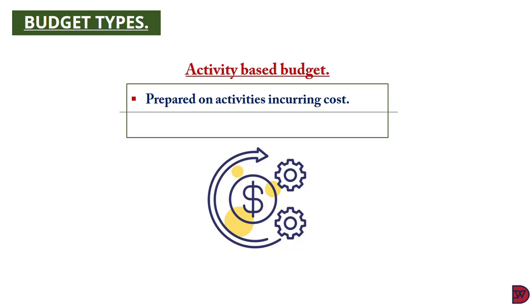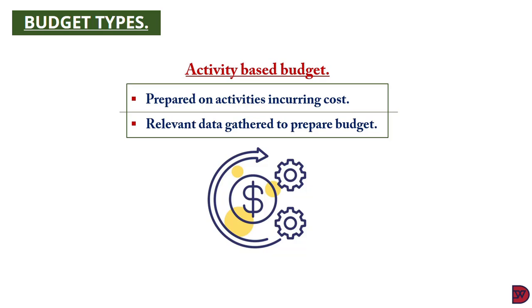The third budget type is activity-based budgeting. This method identifies activities in operations that incur costs and prepares the budget to cover them — such as sales, marketing, and capital activities. The process is broken into three steps: first, identify relevant activities to the business's operations; second, identify the cost drivers — the factors influencing the costs being incurred — and determine the activity level, usually the number of units produced by each activity; third, multiply the cost per unit of each activity by the activity level to achieve the total cost.